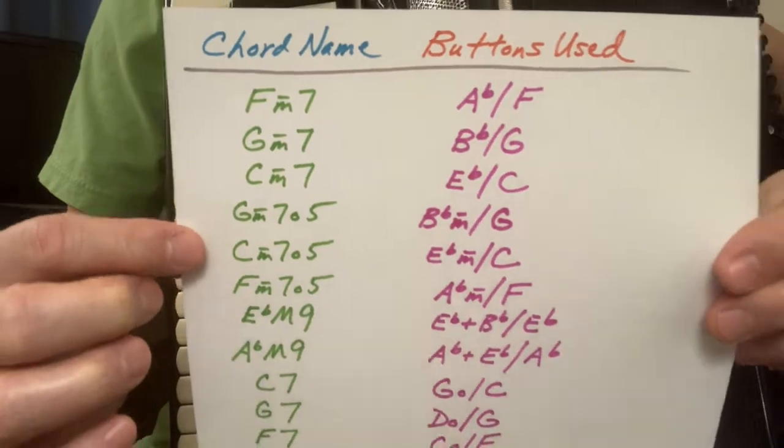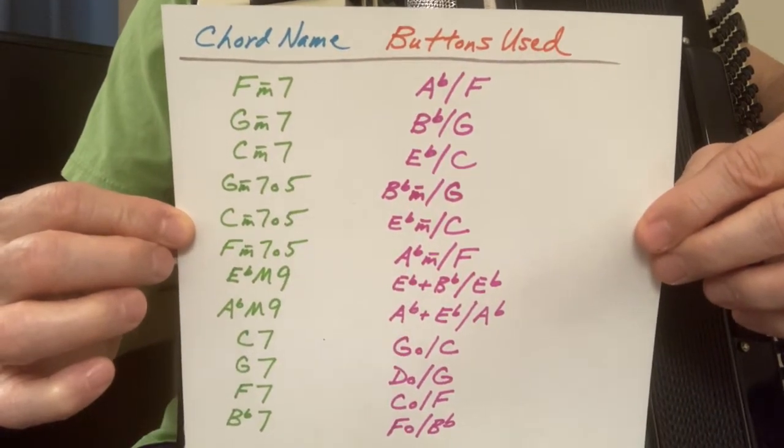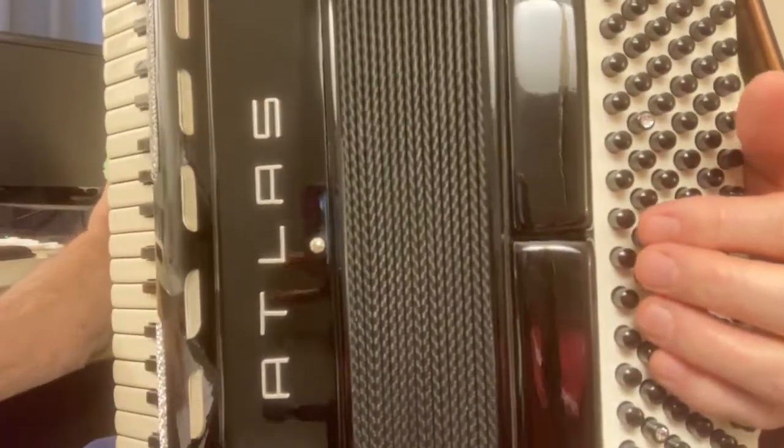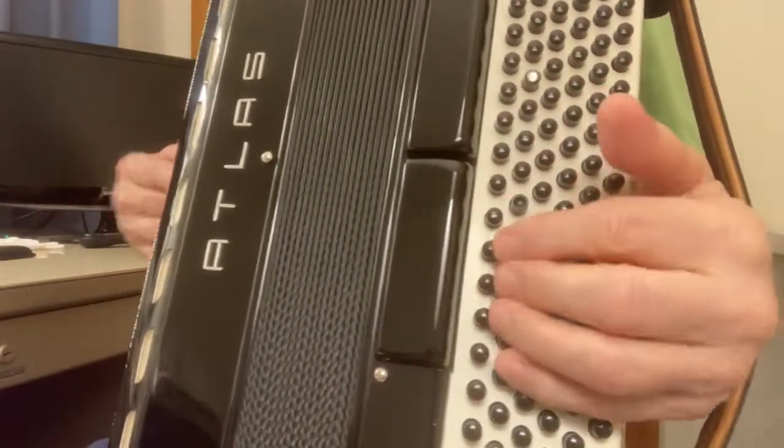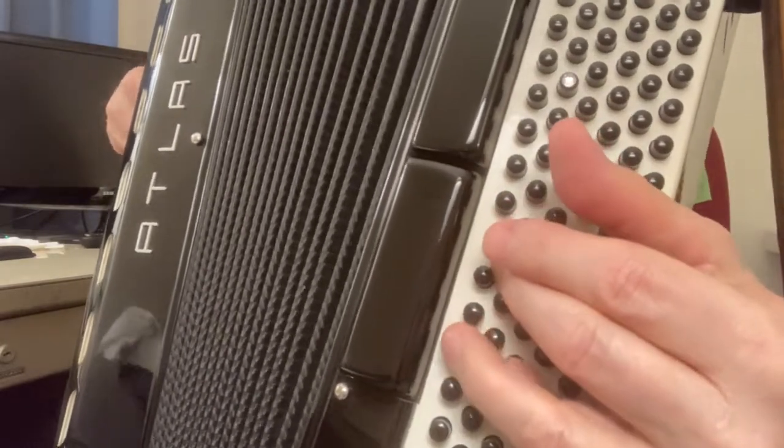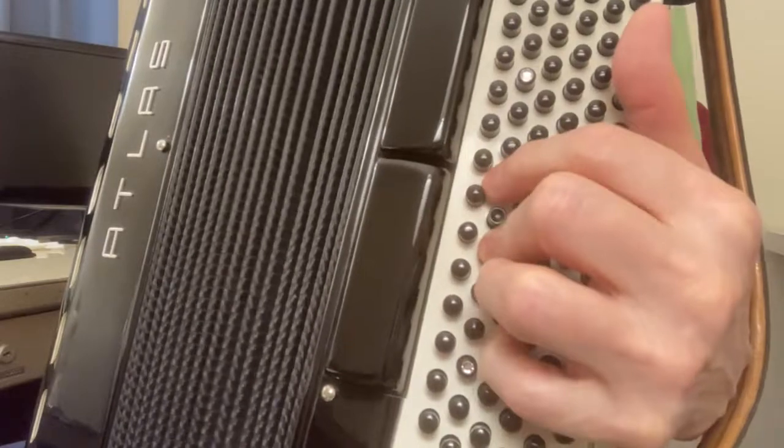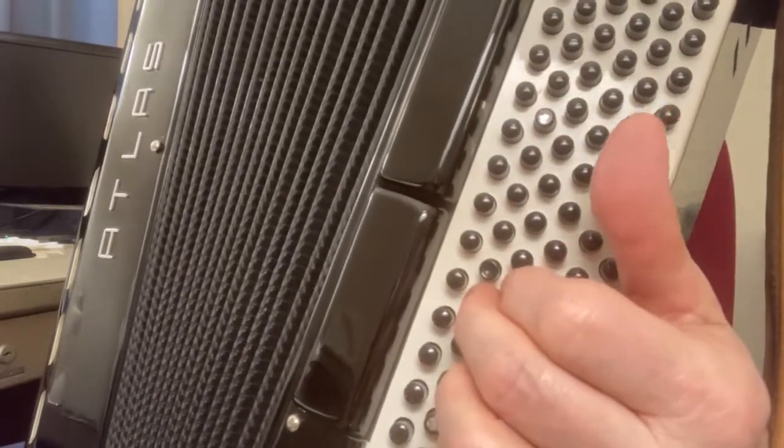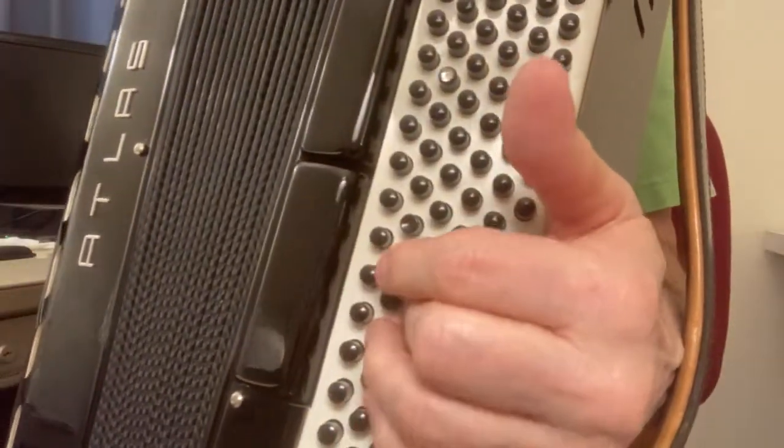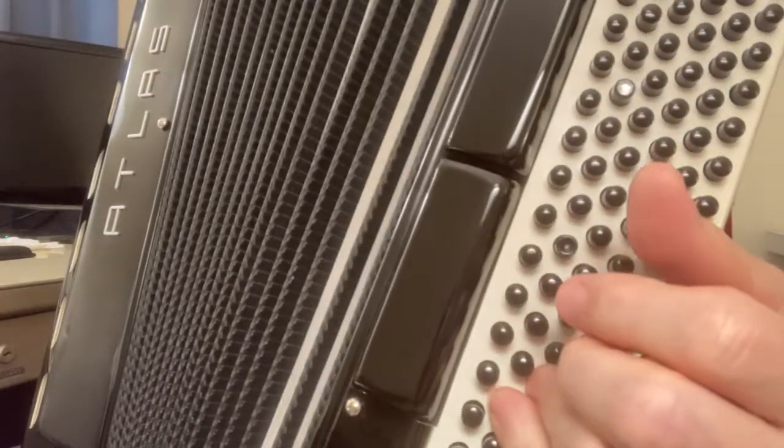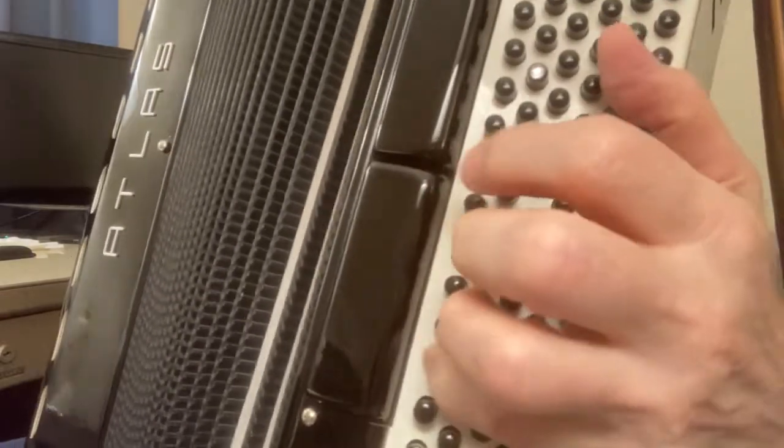So here again are the chords, the formal chord names, and the buttons actually used to make those chords. I just showed you them. Let's run through it one last time, slowly. This is a beautiful song. This is, I think, one of the prettiest songs ever. That was the first verse. Then the second, slightly different, just a little bit. Very, very pretty song.